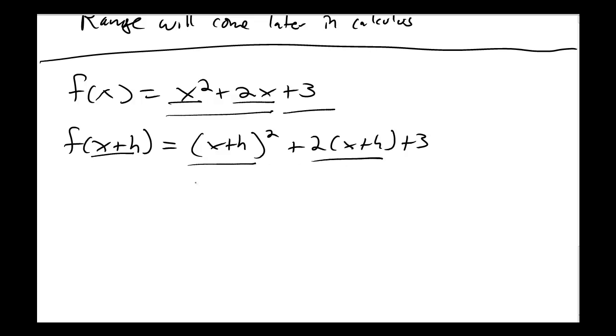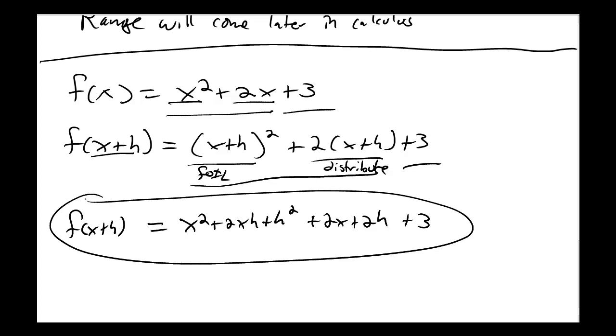x plus h squared I'd have to FOIL, and I get myself x squared plus 2xh plus h squared. 2 times x plus h I have to distribute to get plus 2x plus 2h, and finally I have plus 3. This is the calculated out value of f of x plus h.